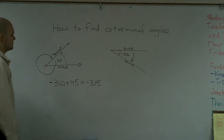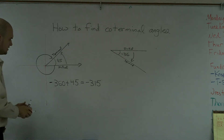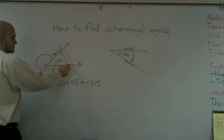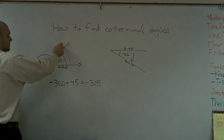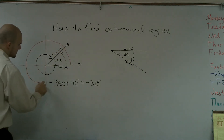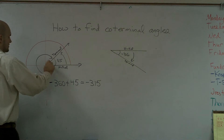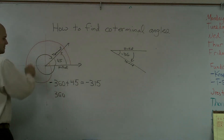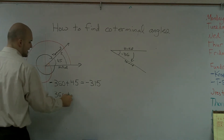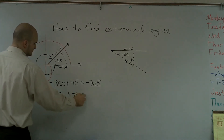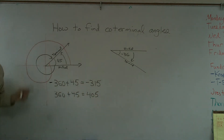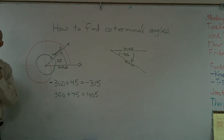Now, what about another angle? What if instead, I'm still starting from my initial side, but I go around once and then go to there? Well, that's going to be 360 — all the way from here to here is 360 — then I'm going to get an extra 45. So that's going to equal 405 degrees. Both of those angles end and start at the same point.